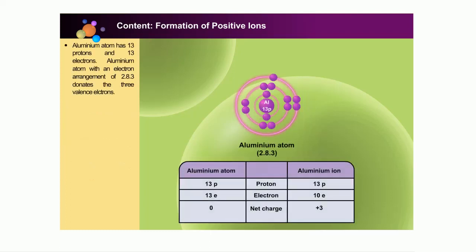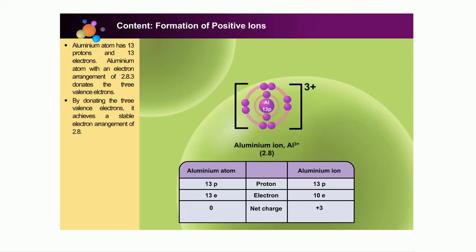Aluminium atom has 13 protons and 13 electrons. The aluminium atom has an electron arrangement of 2-8-3. It has a greater tendency to donate 3 valence electrons. By donating these 3 valence electrons, it achieves a stable electron arrangement of 2-8. Thus, the aluminium atom now has 13 protons and 10 electrons — that is, it gains a net positive charge of 3 and becomes a positive ion.